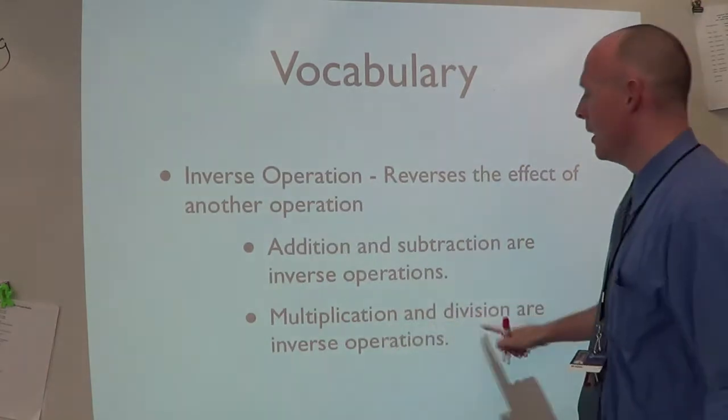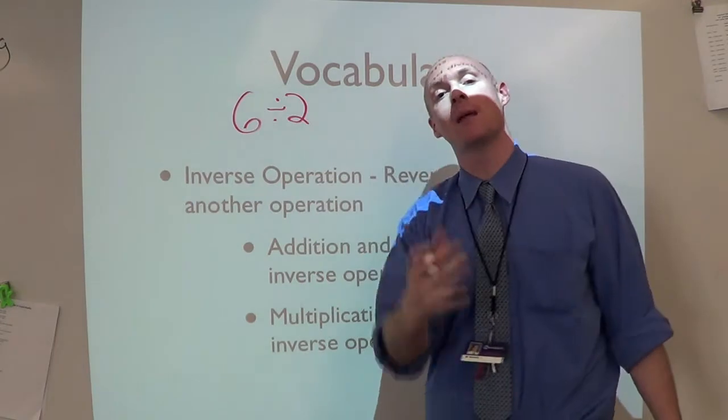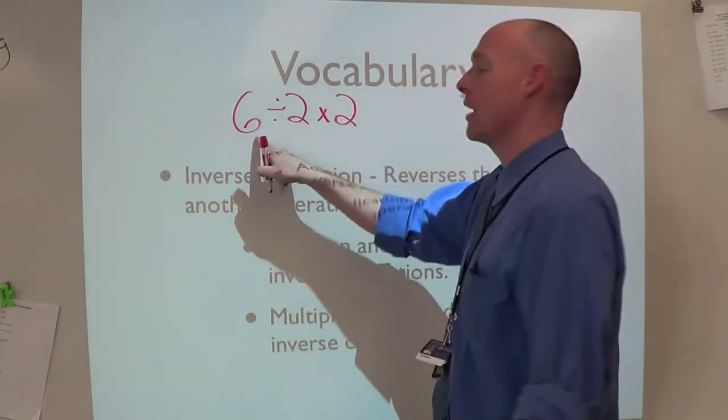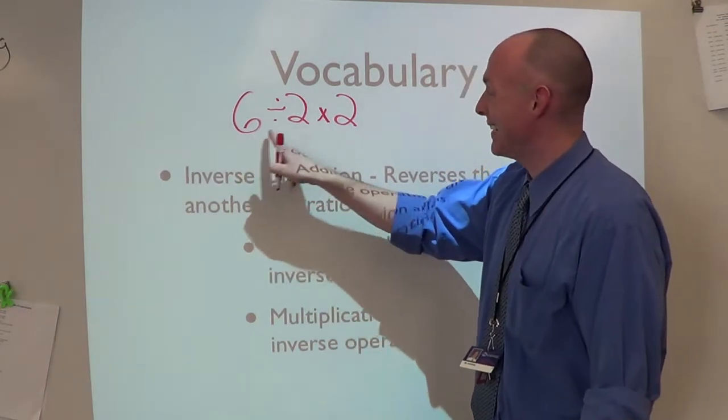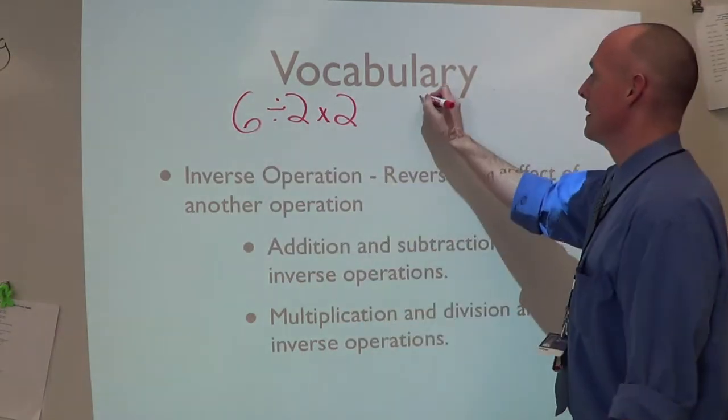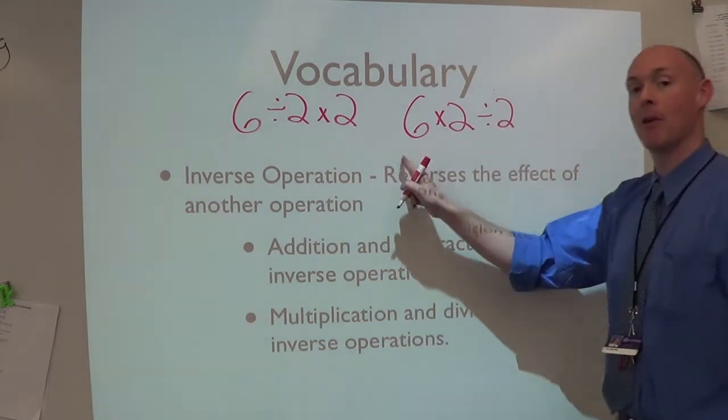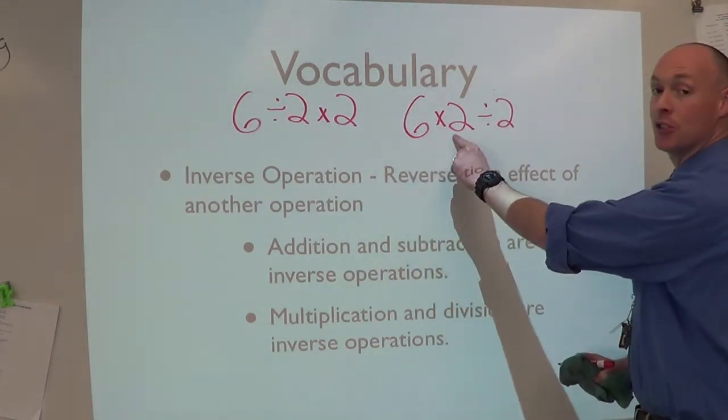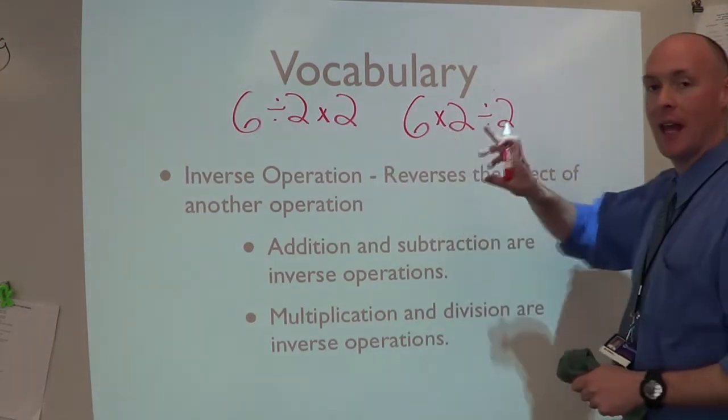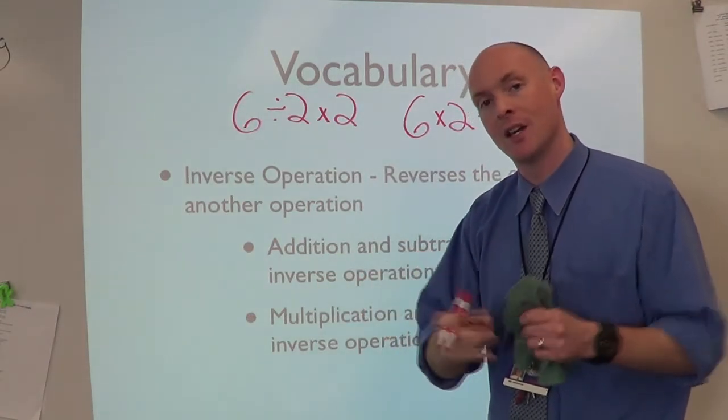What if I had one for multiplication? What if I have 6 divided by 2? Well, 6 divided by 2 is 3. If I times it by 2, we're going to get right back to 6. 6 times 2 divided by 2 - I bet we get right back to 6. 6 times 2 is 12, divided by 2 is 6. Multiplication and division are inverses. They undo each other.